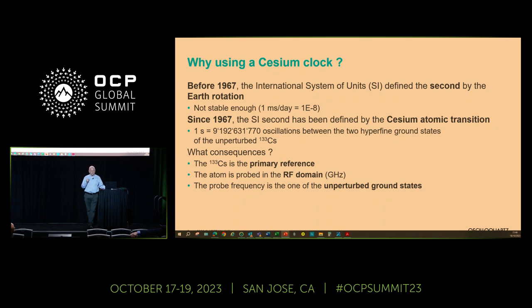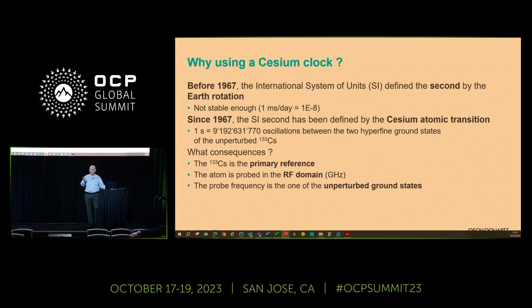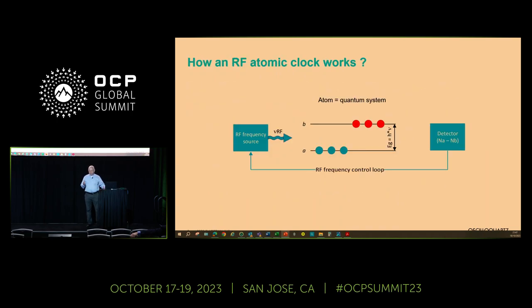Since 1967, the SI second was redefined in order to get better accuracy. One second is defined as 9,192,631,770 oscillations between the two hyperfine ground states of the caesium-133 atom. As a consequence, the primary reference became the Cs-133 atom, probed in the RF domain at the unperturbed ground state transition frequency.